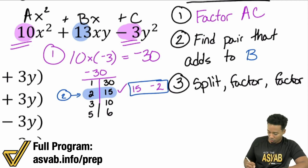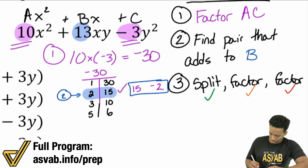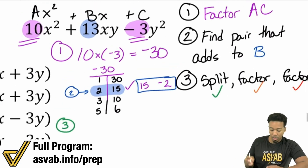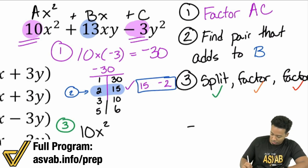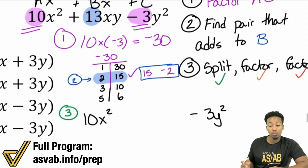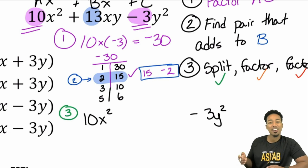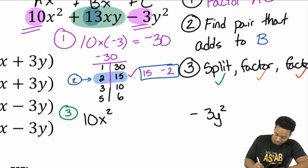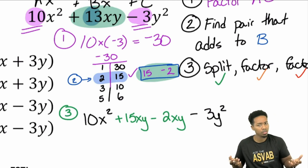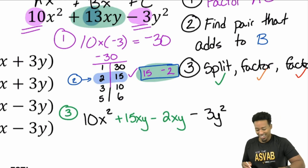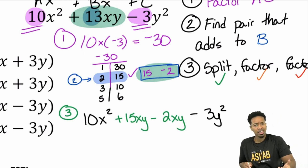Now for step three — split, factor, factor. We start with the split: rewrite the original problem, splitting 13xy into plus 15xy minus 2xy. So the expression becomes 10x² + 15xy − 2xy − 3y². Note that 15xy minus 2xy does go right back to 13xy, so this makes sense.